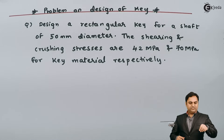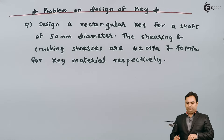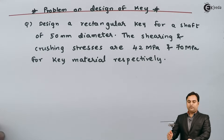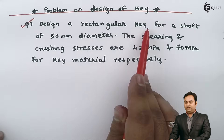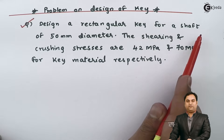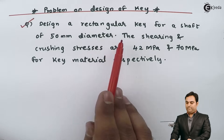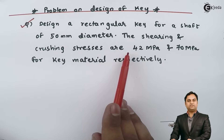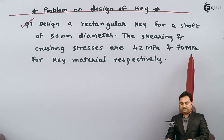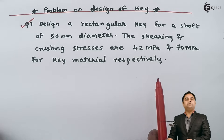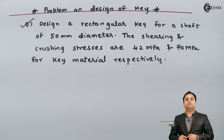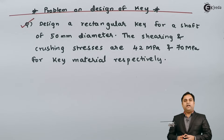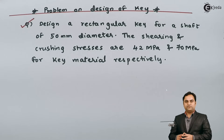Hello friends. In this video we will see a problem on design of a key. The question is: design a rectangular key for a shaft of 50 mm diameter. The shearing and crushing stresses are 42 MPa and 70 MPa for the key material respectively. Let us get started with the data.